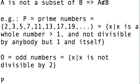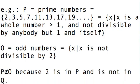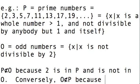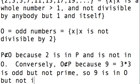Well, why is P not a subset of O? Because I can find an element in P which is not in O, because 2 is in P and is not in O. Conversely, O is not a subset of P because, say, 9 is 3 times 3, is odd but not prime.